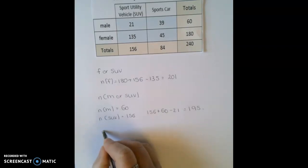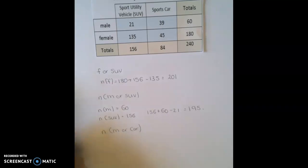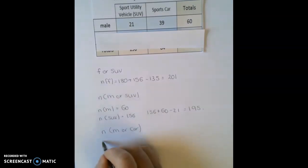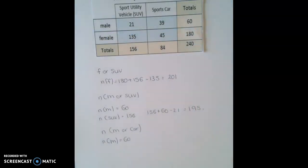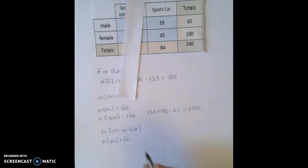And our final one, the number of males or the number of people who picked a car. So again, the number of males total, it doesn't matter whether they picked an SUV or a car, is 60. And the number of people who picked a car, it doesn't matter if they were male or female, is 84.